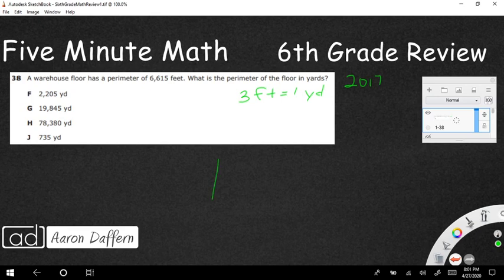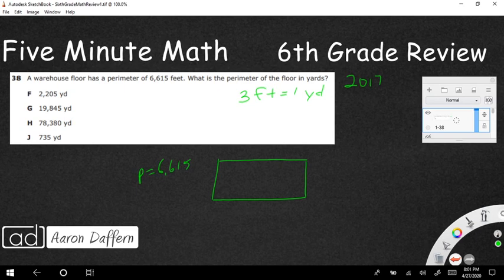So when you've got a perimeter, let's say it's a rectangle here and we're just going to say p equals 6,615 feet. How does that translate into yards?